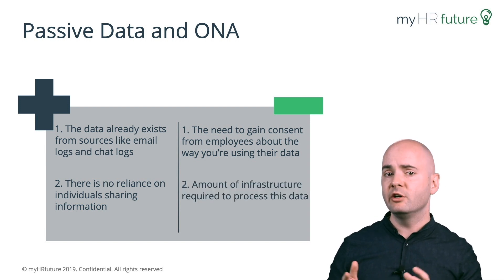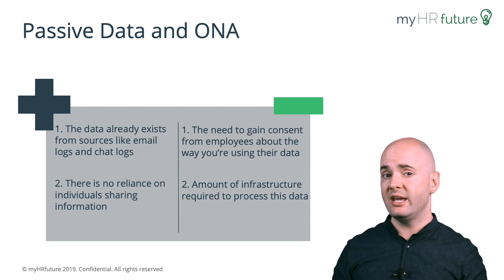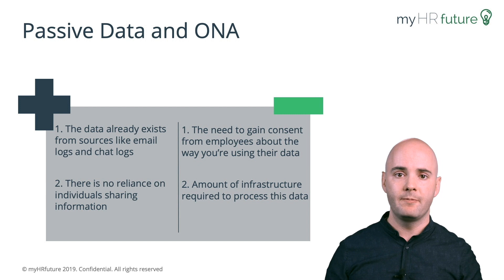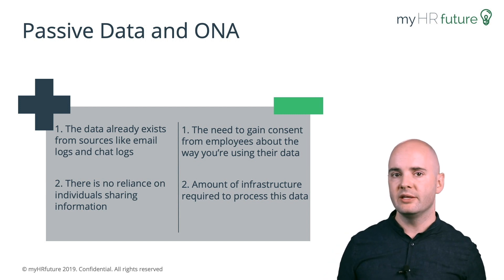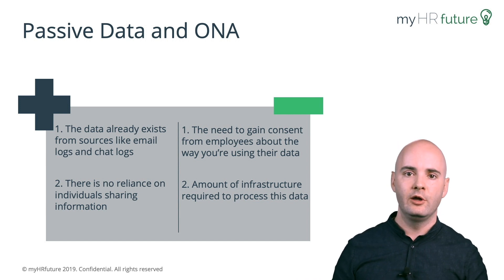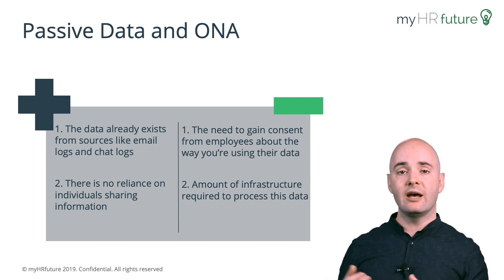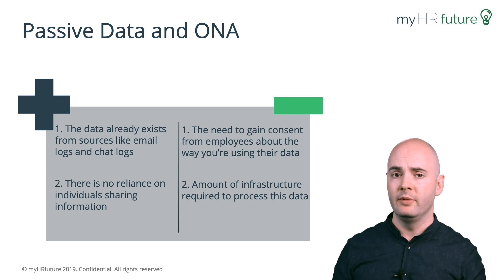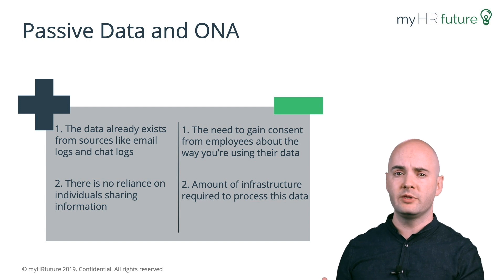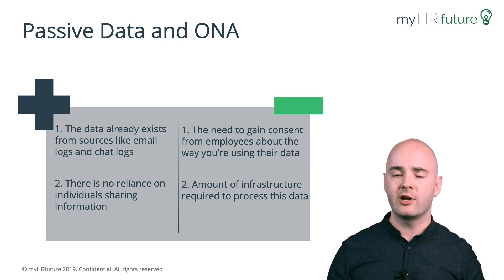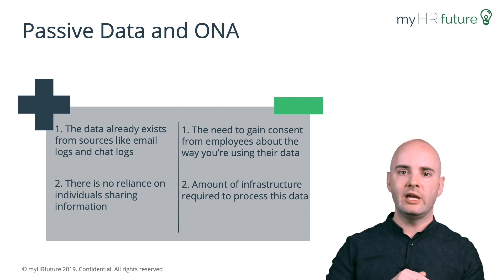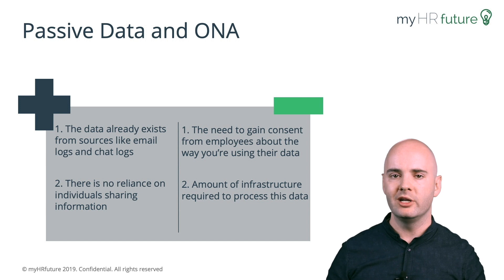The second most challenging piece about using passive data is the amount of infrastructure that you might need to process it. In a large enterprise, crunching data on the flows of communication between people when there are tens of thousands of employees is a big data problem. It may require large servers and some help with data engineers or data scientists in your organization to process it properly so we understand relationships between any two given people.